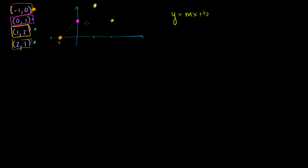Now my goal in this video is to find some line, y equals mx plus b, that goes through these points. Now the first thing you might say is there is not going to be any line that goes through all of these points. You could find a line that maybe goes through some of these points, but it's not going to go through all of them. So you're not going to be able to find an exact solution. But let's at least set up the equation and use our least squares approximation to find a line that is the best approximation for going through those points.